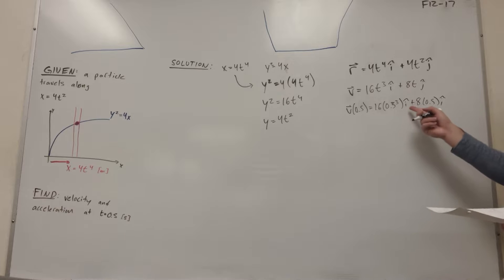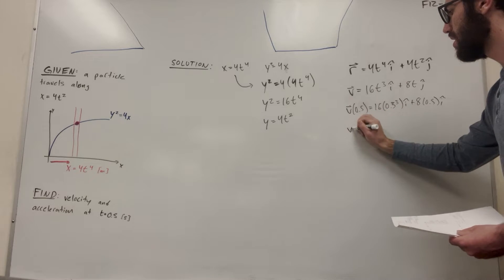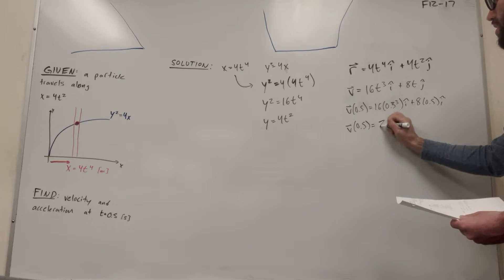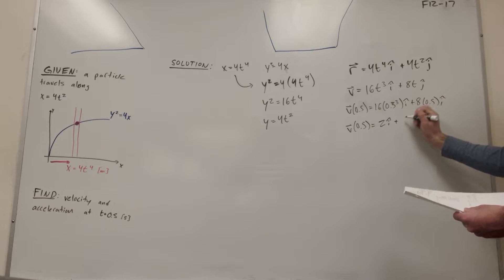v at 0.5 equals 16 times 0.5 to the 3rd i plus 8 times 0.5 j. So 0.5 to the 3rd is one-eighth, so it's going to be 16 divided by 8. And we're going to get that v at 0.5 is equal to 2i plus 4j. And then this is in meters per second.